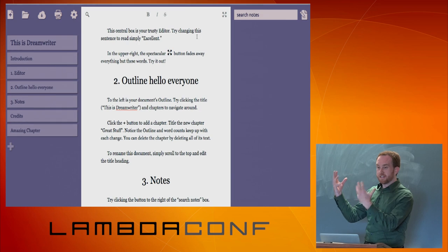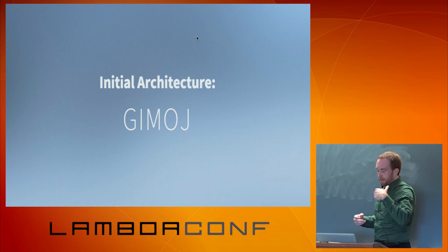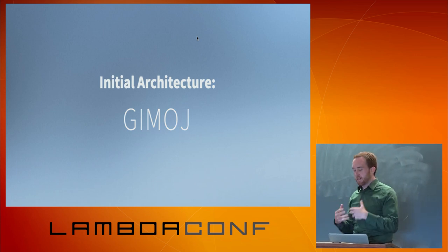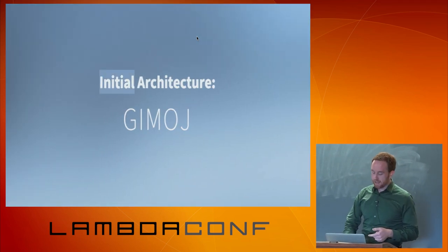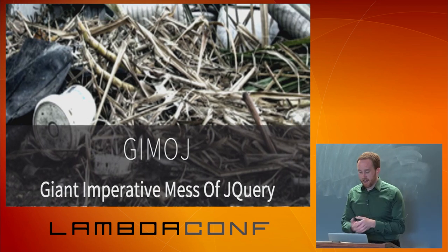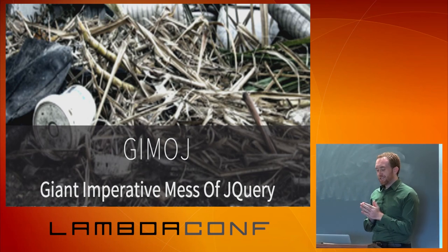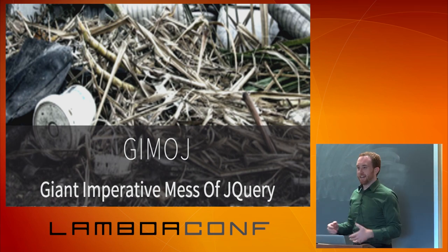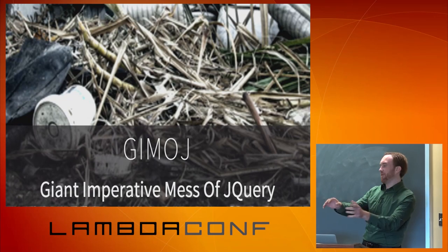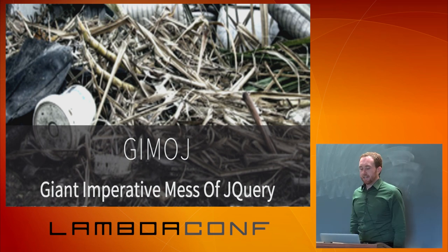The answer has to do with the architecture of the original version of DreamWriter. What I used for that is GMoJQ — Giant Imperative Mess of jQuery. Very popular, very well known. To be fair, when I started off it was just imperative jQuery. It wasn't a giant mess until I did all this iteration. I tried out what I built and found, oh no, I can't do it that way, I got to change this, this is all wrong. You do that, you accumulate technical debt, and eventually things get out of hand and you end up with a giant mess.